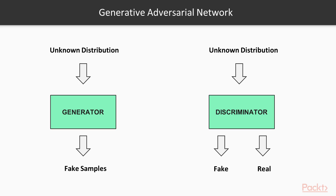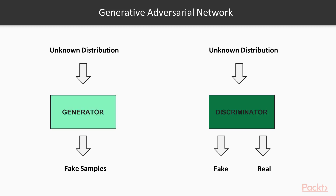A Generative Adversarial Network simultaneously trains two networks: a generator that learns to generate fake examples from an unknown distribution or noise, and a discriminator that learns to distinguish fake from real samples.